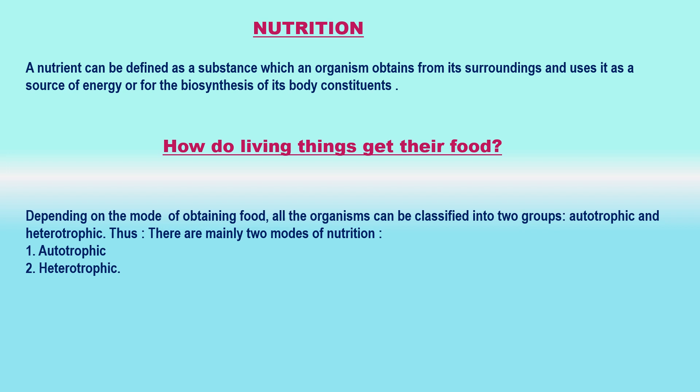How do living things get their food? All organisms do not obtain their food in the same way. Different organisms have different methods of procuring food — in other words, organisms differ in their modes of nutrition. Depending on the mode or method of obtaining food, all organisms can be classified into two groups: autotrophic and heterotrophic. Thus, there are mainly two modes of nutrition: autotrophic and heterotrophic.